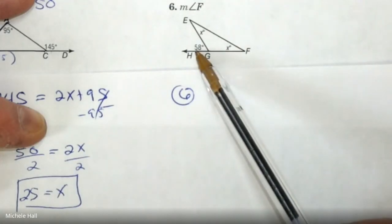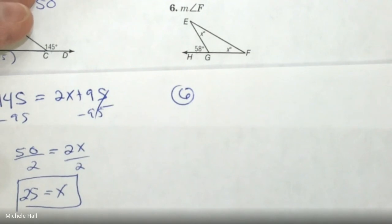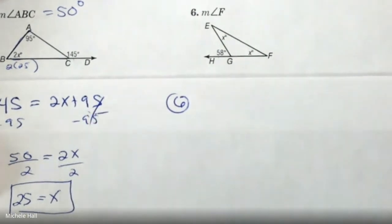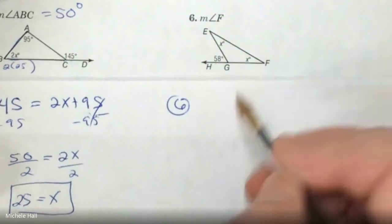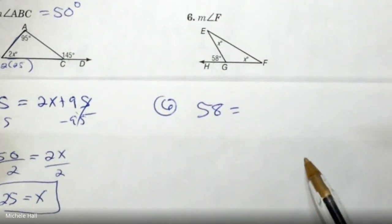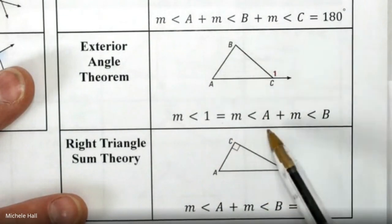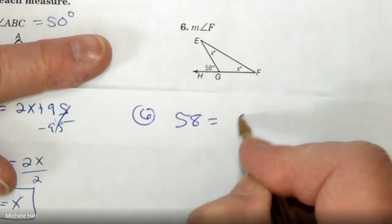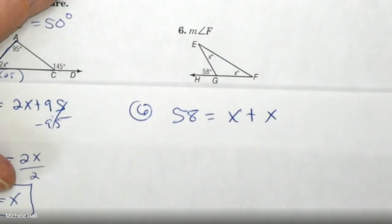Number 6 — we have another exterior angle. Set up your equation: the exterior angle equals the two angles on the inside being added up. No matter how weird it looks, write it down. The exterior angle equals X plus X — those are the two interior angles. Just follow the formula. Now we're ready to simplify and solve. X plus X equals 2X.